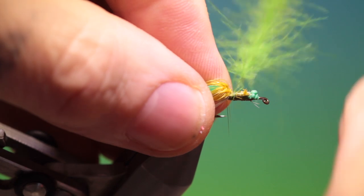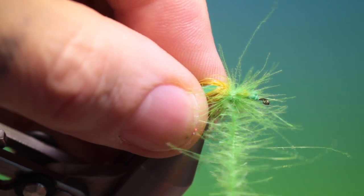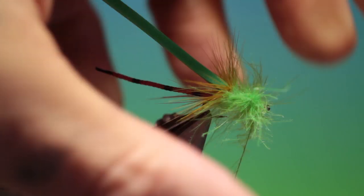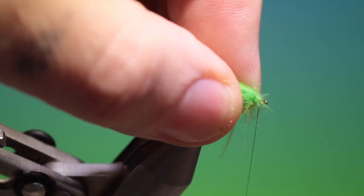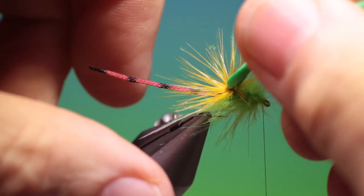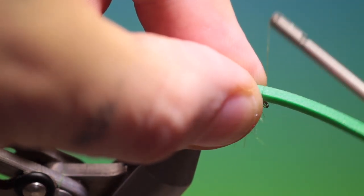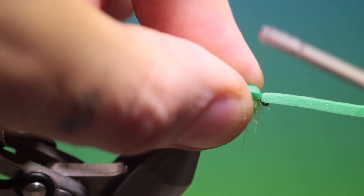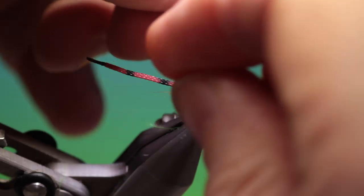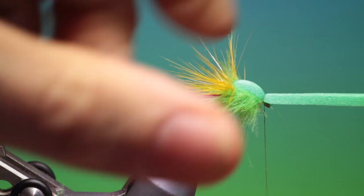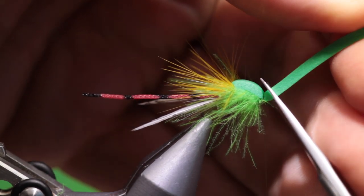And then we lift back the parachute hackle. Just wind this forward. And we bend over. Pull all that back. Bend the foam over. Good. Trim off that there.